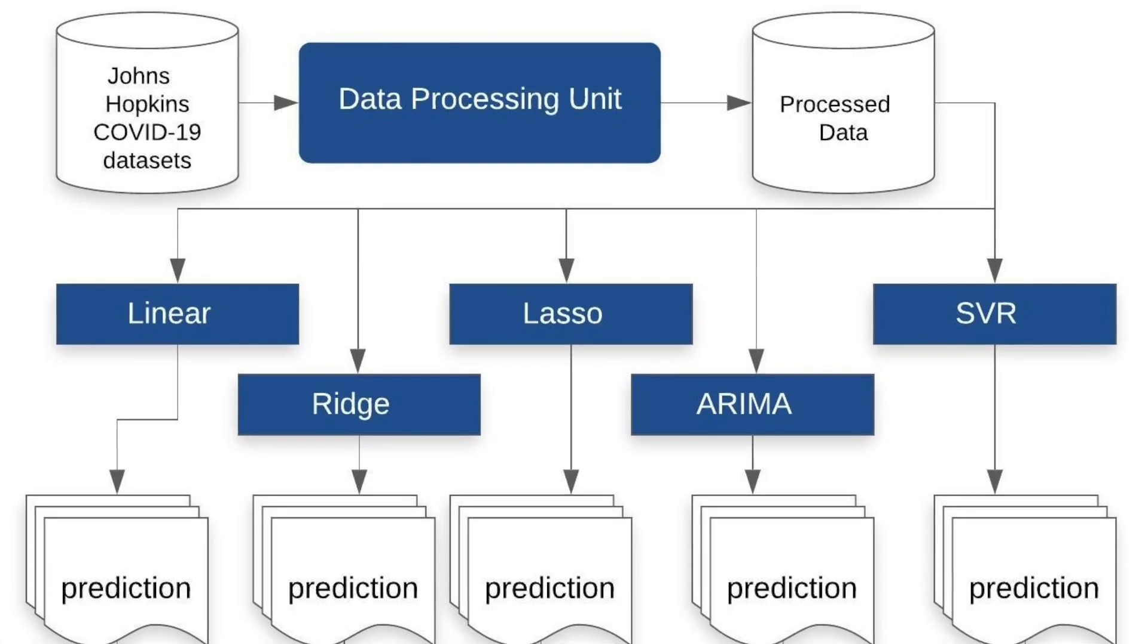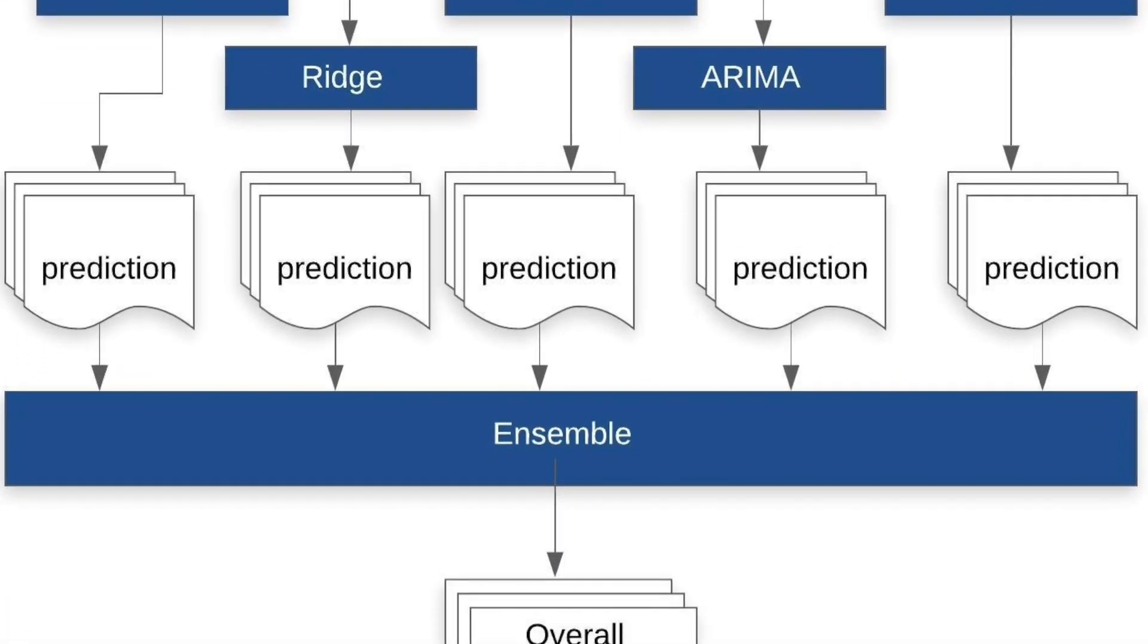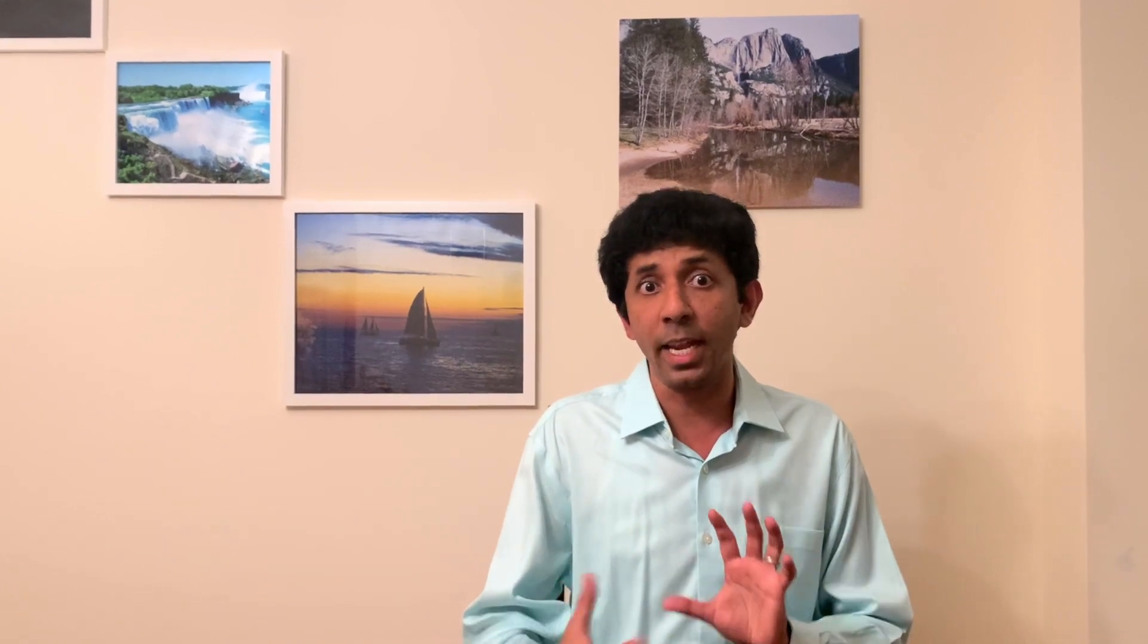These are five different models that we considered and then what we did is we constructed an ensemble model. The figure that you can see here shows an ensemble layer. What the ensemble layer does is that it actually takes these five models and then uses the model that is best. Different models will work well for different countries and that is what we have seen from our study as well. So we want to pick the one that is best for the country that we are interested in or exploring.